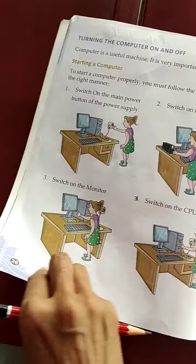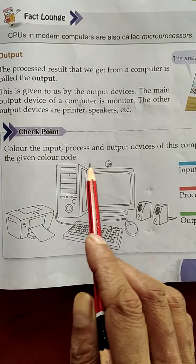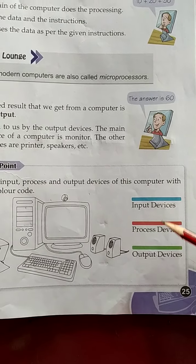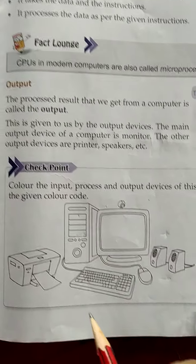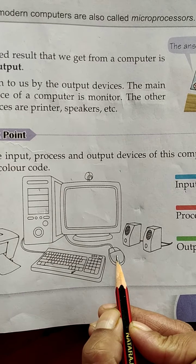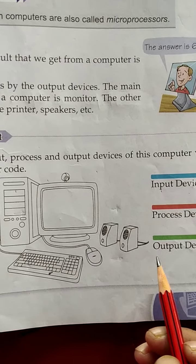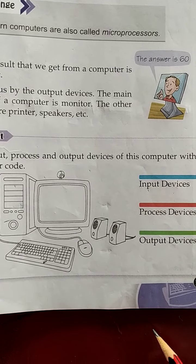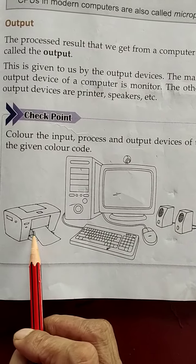Second statement: in the example of a washing machine, clean clothes are the output. When we get clean clothes, it is the output of the washing machine — so it is true. Third statement: processed data is called memory — that is false; processed data is called output. Fourth statement: we shut down the computer using the start button — that is true, as seen in the previous video.